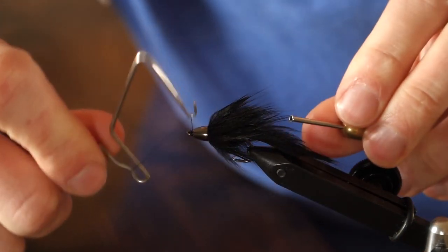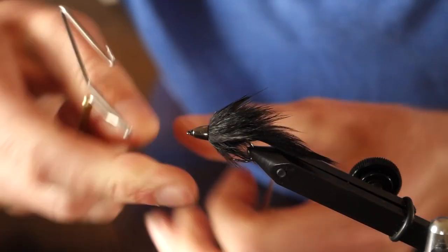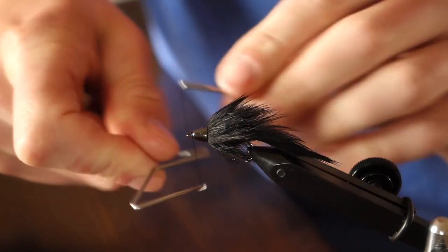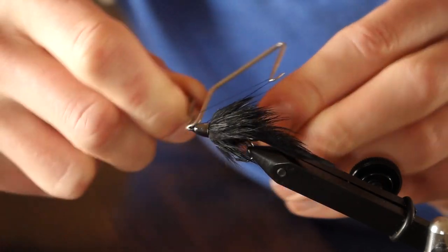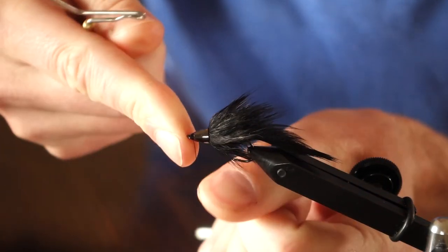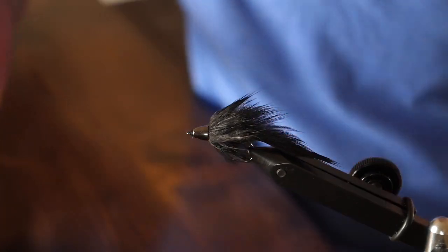Again, I'll do two whip finishes just to finish off that bump. At this point, our slump buster is done. So let's see how it fishes.